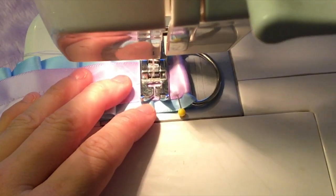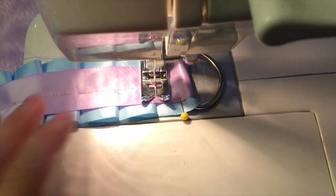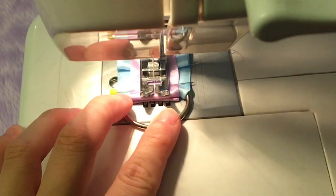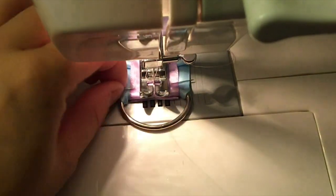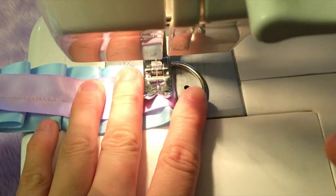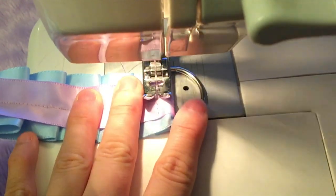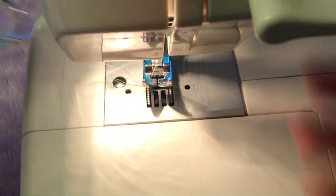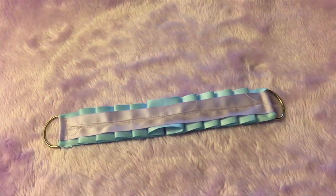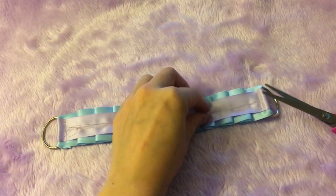And then we are going to start stitching where we left off. Pivot your collar and then start stitching up. Back stitch a bit. Pivot your collar once more and then stitch up and down quite a few times to lock that d-ring in place. This is what it should look like once you've secured those d-rings. And then cut the excess threads.